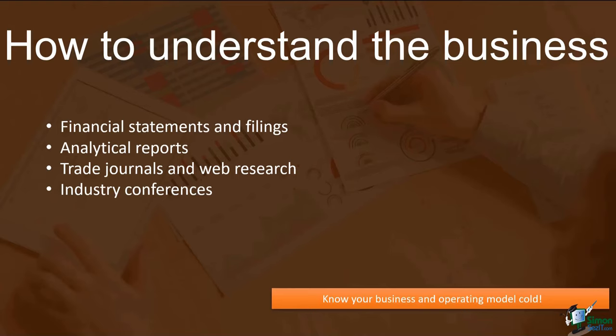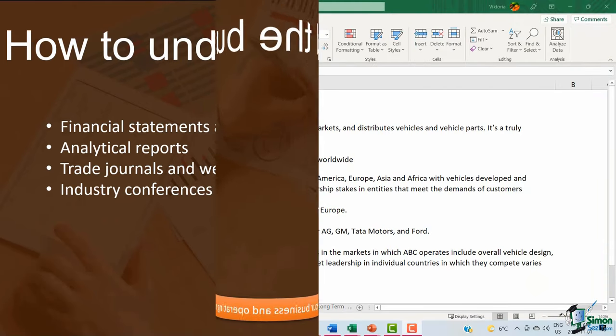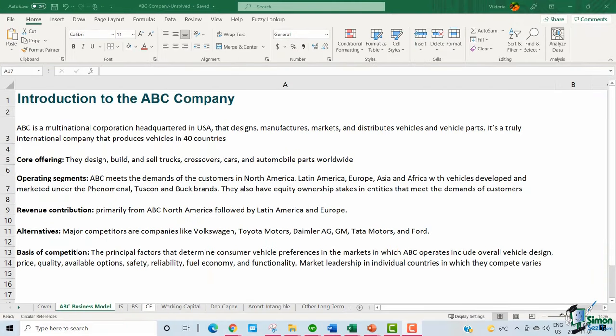I will be discussing how you can use the financial statements to understand the business in this module. In the next module, we will discuss what web research needs to be conducted and how it can be utilized to understand the business. The company we will be using as a basis to create a financial forecast from scratch is called ABC — a multinational corporation headquartered in the USA that designs, manufactures, markets, and distributes vehicles and vehicle parts. It's a truly international company that produces vehicles in 40 countries. Their core offering is designing, building, and selling trucks, crossovers, and cars worldwide.